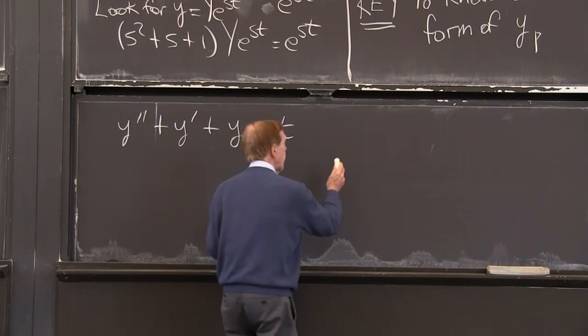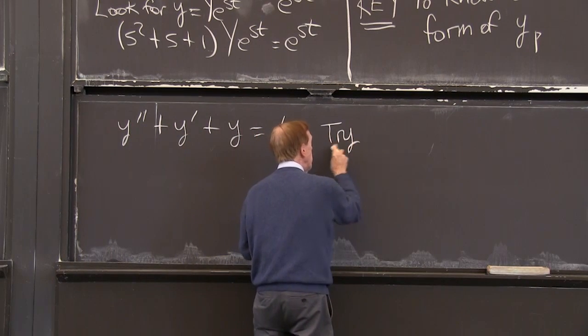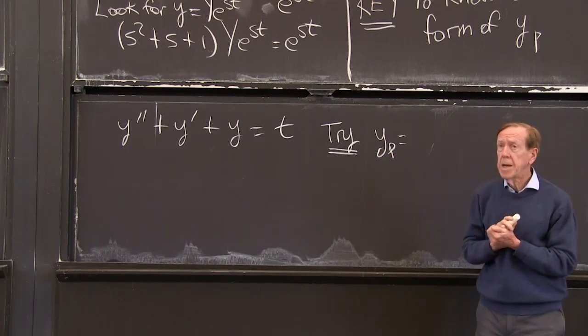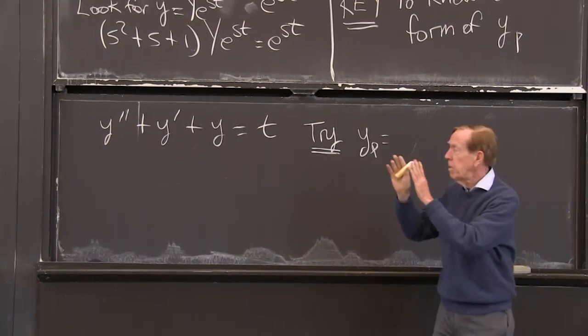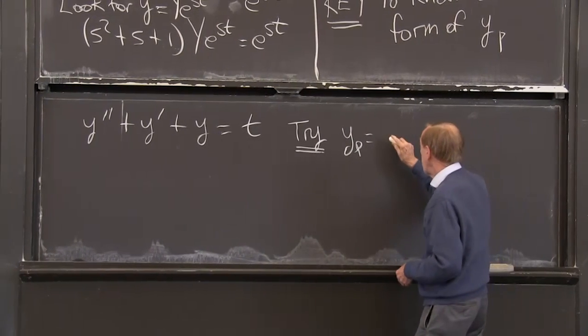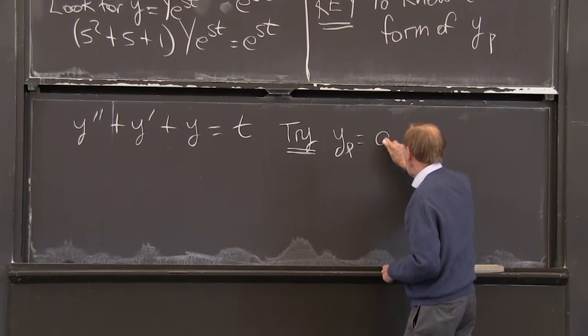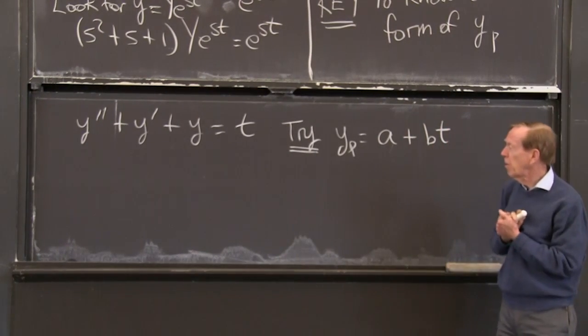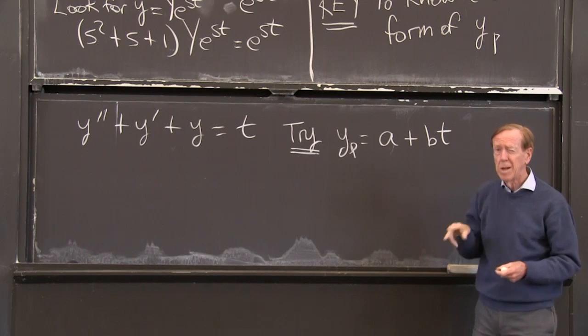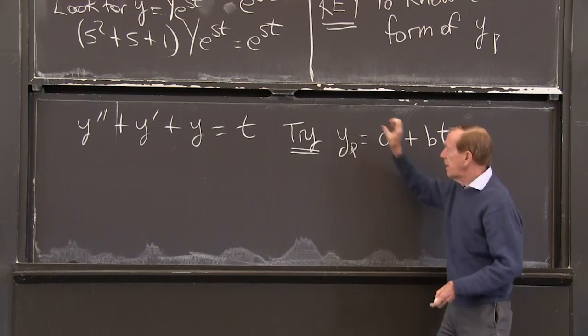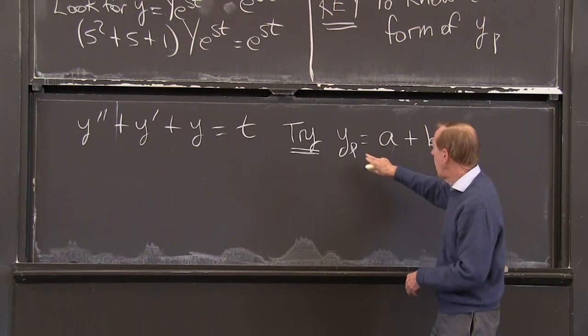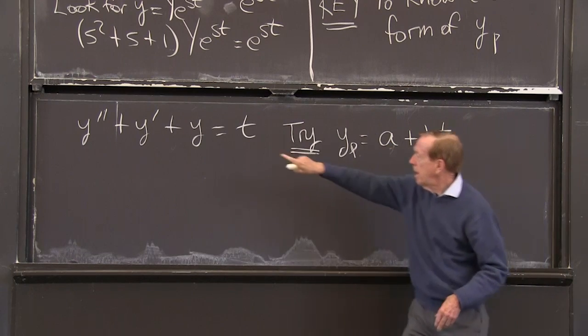So what would be a particular solution to that equation? Try. So I really have to say, what is the try y particular equals. Now, if I see a t there, then I'm going to look for a t in y. And I'll also look for a constant. So a plus bt would be the correct form to look for. This now has two undetermined coefficients, and we determine them by putting that into the equation and making it right.